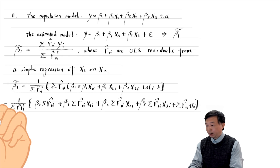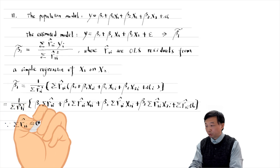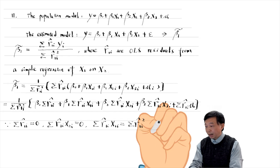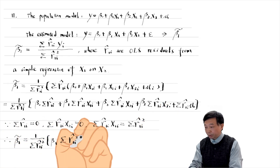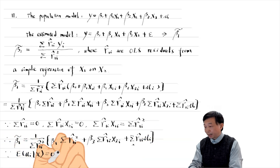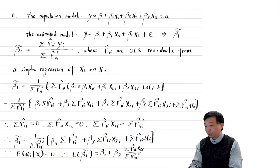We have five terms in the numerator. From the simple regression of x1 on x2: the sum of residuals r1 hat is 0, the sample covariance between x2 and r1 hat is 0, and the sample covariance between x1 and r1 hat equals the sample variance of the residuals. These properties simplify the numerator into three terms. Since the error term mu is uncorrelated with x, the expected value of the last term is 0. Finally, we obtain the expected value of beta 1 tilde in the presence of the omitted variable x3.